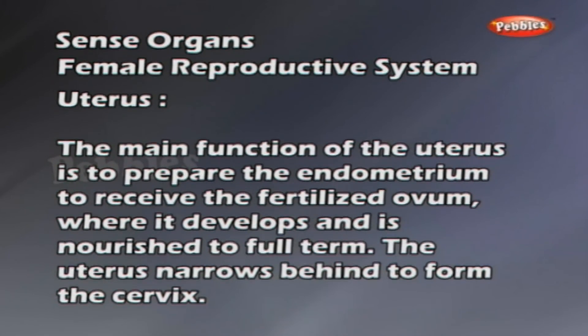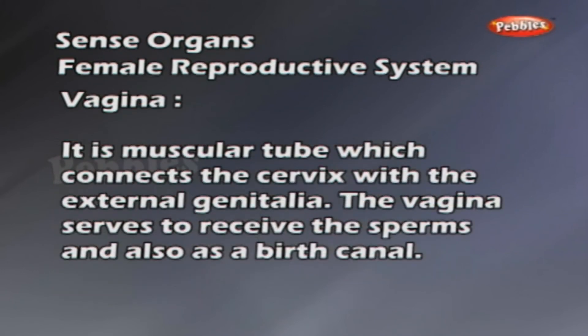Vagina: it is a muscular tube which connects the cervix with the external genitalia. The vagina serves to receive the sperms and also as a birth canal.